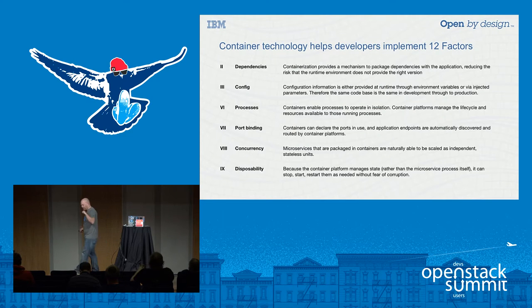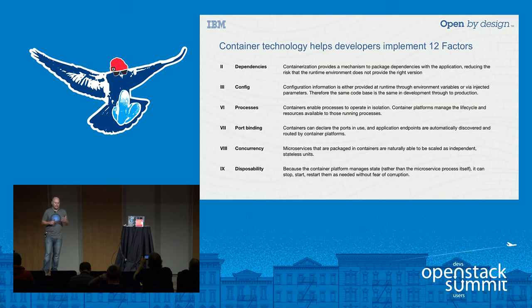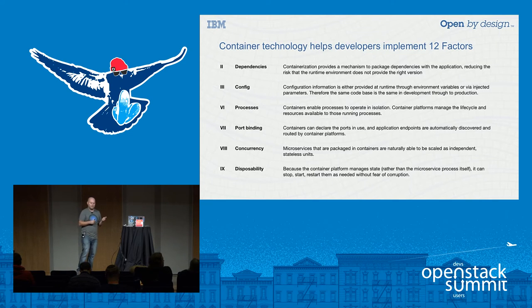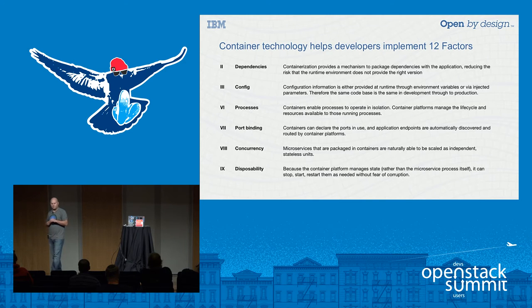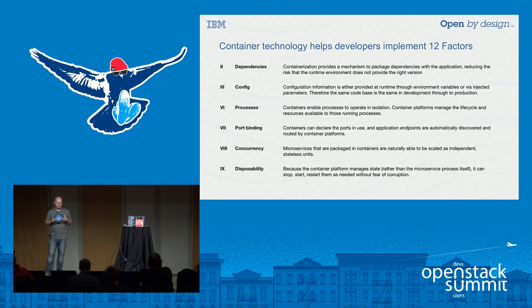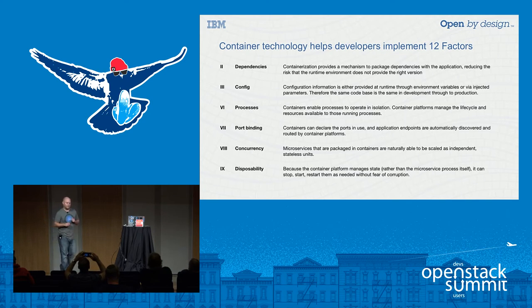Mapping those best practices to containers: all of these open source container runtimes allow you to provide a way to declare those dependencies. With Docker, for example, you explicitly put them in a Dockerfile, build and package. With configuration, a container platform runtime can give you all the configuration that you need. Everything that's going to be run across any of the deployment platforms is going to ensure that your application is completely isolated as a process.